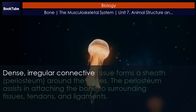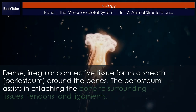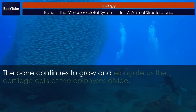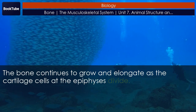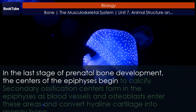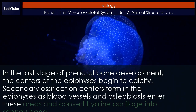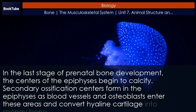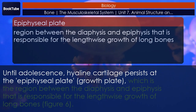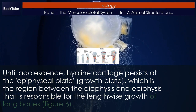Dense, irregular connective tissue forms a sheath called the periosteum around the bones. The periosteum assists in attaching the bone to surrounding tissues, tendons, and ligaments. The bone continues to grow and elongate as the cartilage cells at the epiphysis divide. In the last stage of prenatal bone development, the centers of the epiphysis begin to calcify. Secondary ossification centers form in the epiphysis as blood vessels and osteoblasts enter these areas and convert hyaline cartilage into spongy bone. Until adolescence, hyaline cartilage persists at the epiphysial plate (growth plate), which is the region between the diaphysis and epiphysis responsible for the lengthwise growth of long bones.